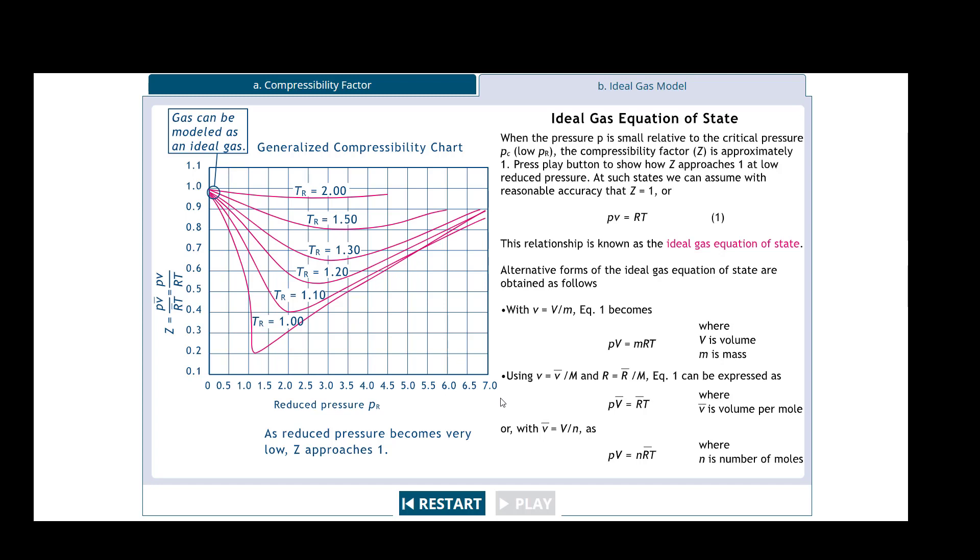You see as the reduced pressure becomes very low, Z approaches one. That's based upon what we've kind of already talked about. It goes to show along the lines that as reduced pressure becomes very low, Z approaches one. Along with the formulas, this is the equation of state pv equals rt, but then also we have the alternative form of the ideal gas equation of state pv equals rt, which you'll see this a lot because it's going to include the mass. I hope that this is helpful.